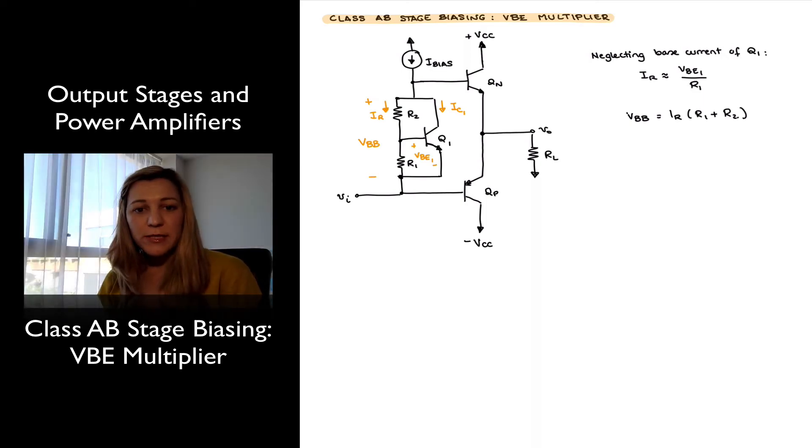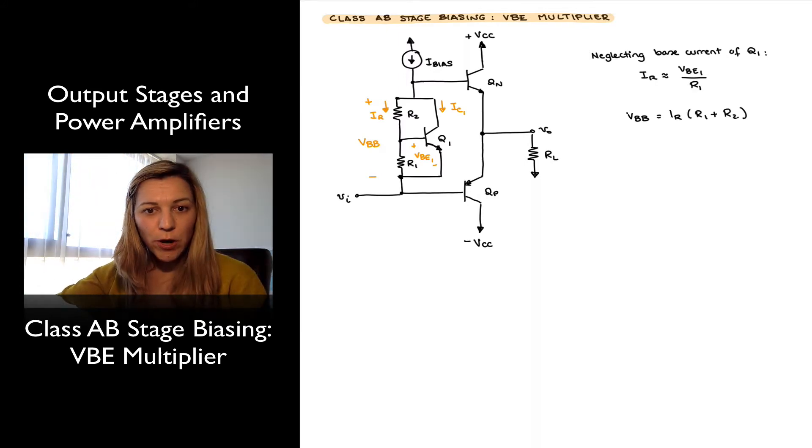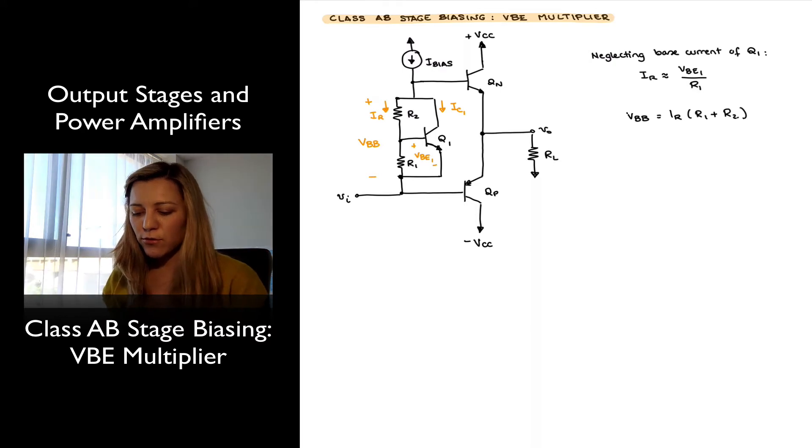Another possible biasing scheme for the class A-B output stage is what's known as a VBE multiplier. I've drawn it here—you can see we still have our output transistors Qn and Qp, and now our biasing network consists of another transistor Q1 biased with two resistors R1 and R2, and there is a current source I-bias which is providing the biasing current for that biasing configuration, the VBE multiplier.